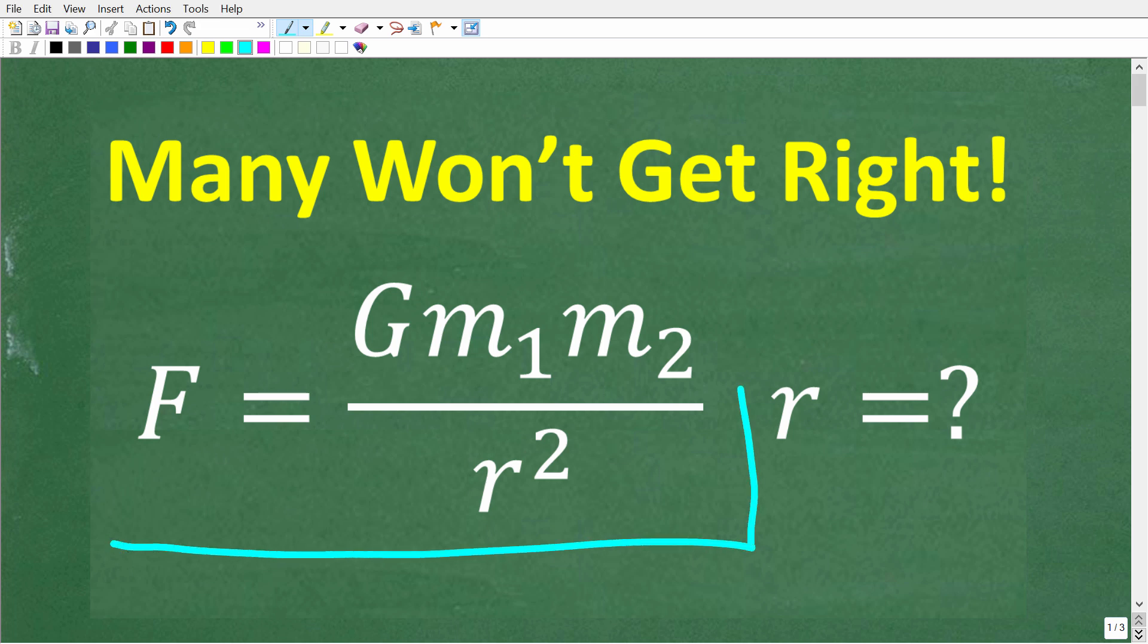So we have a formula here, and this is a physics formula, and it has something to do about the force between two bodies. So let's say, for example, we have the Earth and the Moon. There is a kind of gravitational pull here that's going on, and this is the formula that we would use.